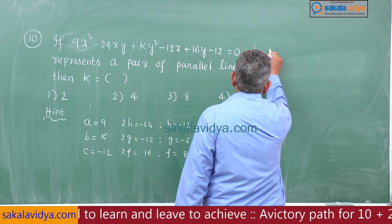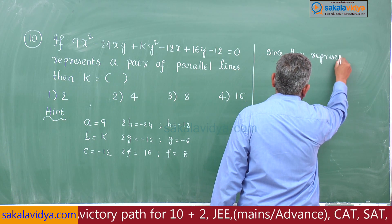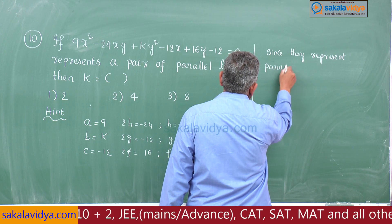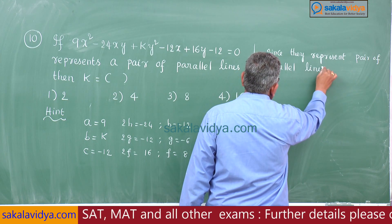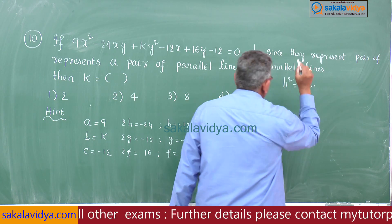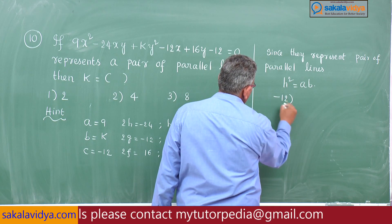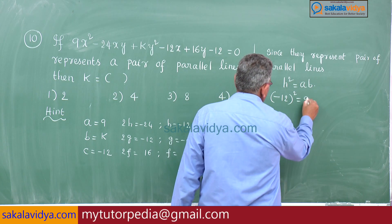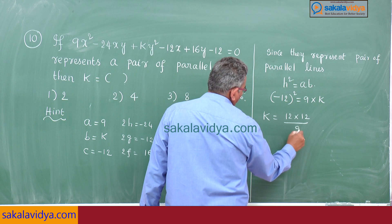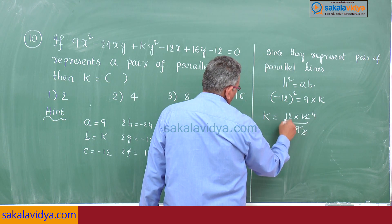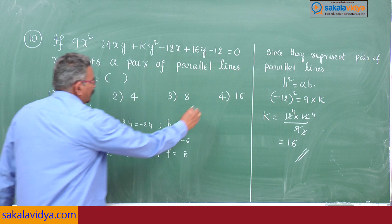Since the equation represents a pair of parallel lines, the condition h² = ab must hold. Substituting: (-12)² = 9 × k, so 144 = 9k, giving k = 144/9 = 16. Therefore k = 16, which is the fourth option and the correct answer.